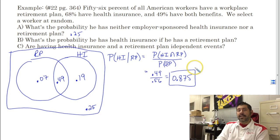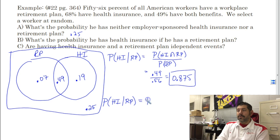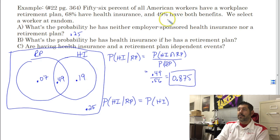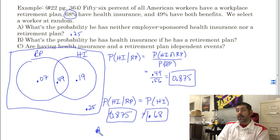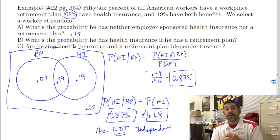Are having health insurance and a retirement plan independent events? We check: is the probability of health insurance given a retirement plan equal to the probability of just having health insurance? The probability of just having health insurance is 0.49 plus 0.19, which is 0.68. The conditional probability is 0.875. Since 0.875 does not equal 0.68, these two events are not independent. Had those probabilities been equal, we would say the events are independent.